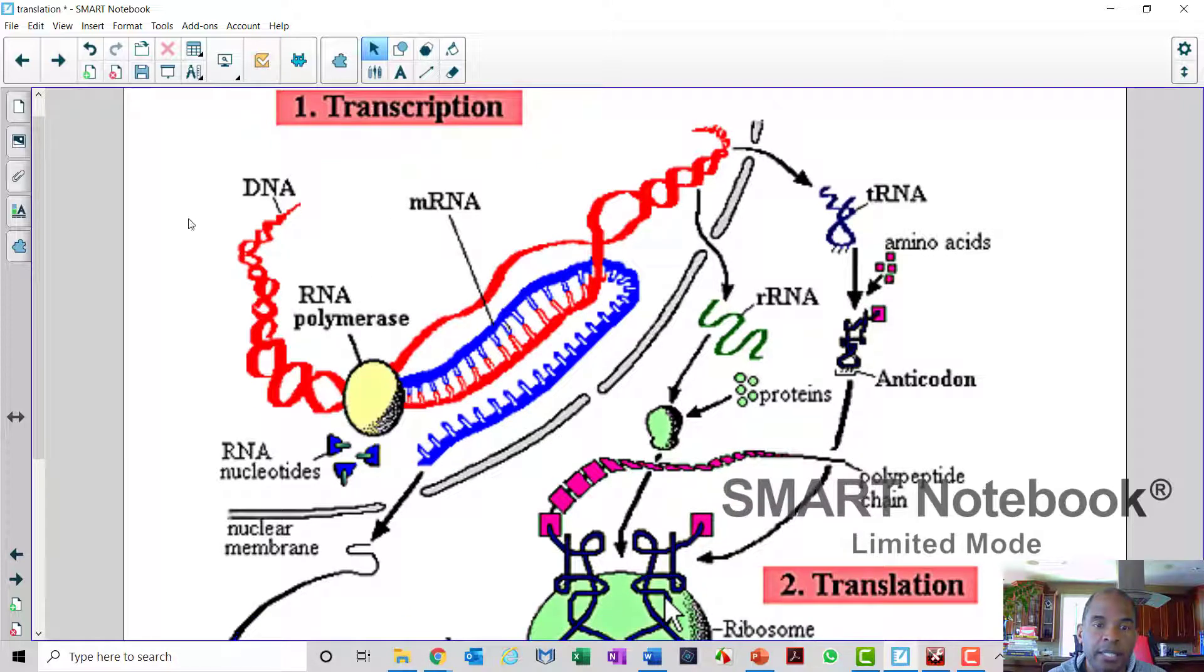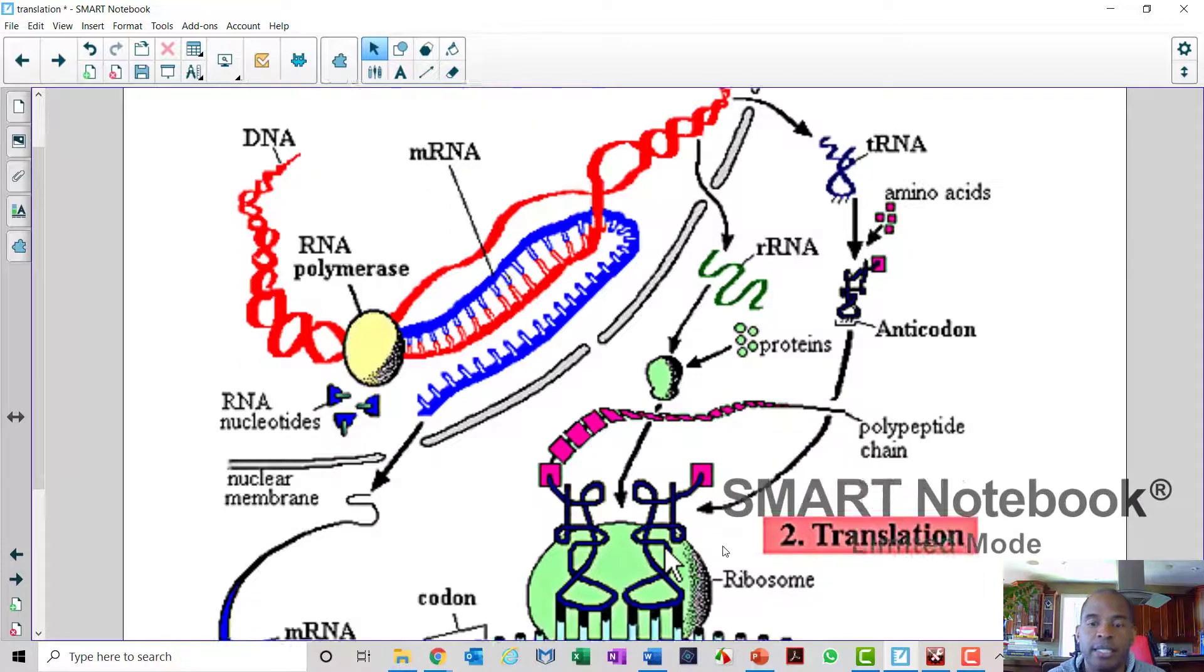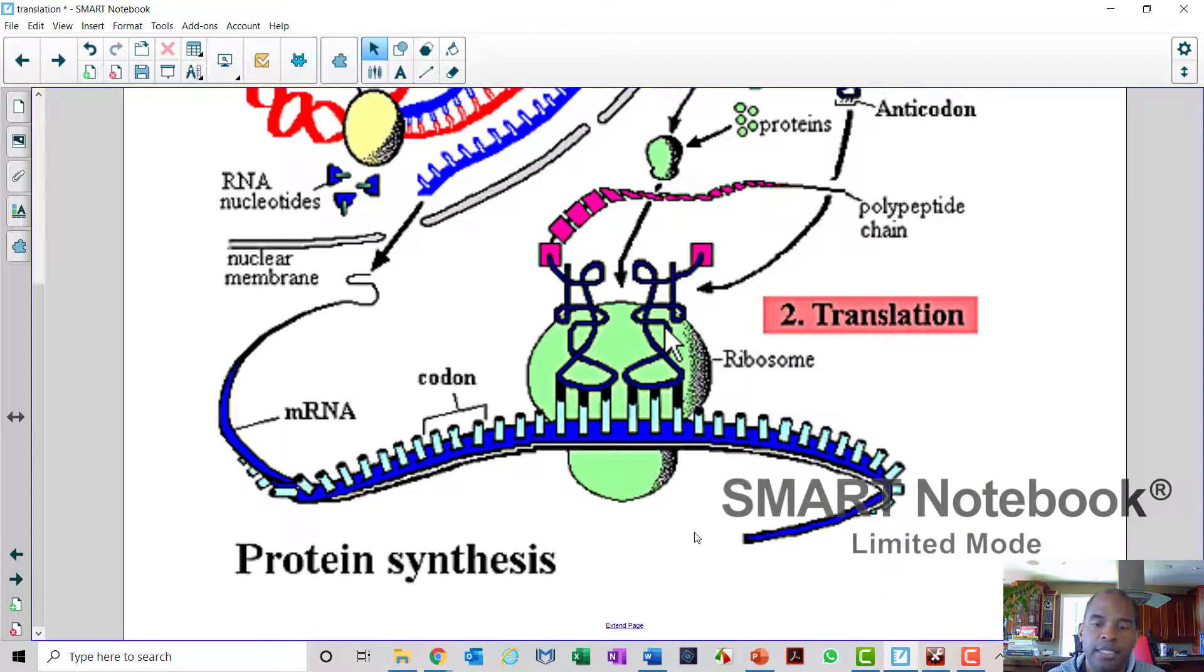So that shows the entire process. DNA is transcribed into mRNA and the mRNA is translated into protein. The protein then leaves the cell or stays in the cell doing whatever job that protein is supposed to do.